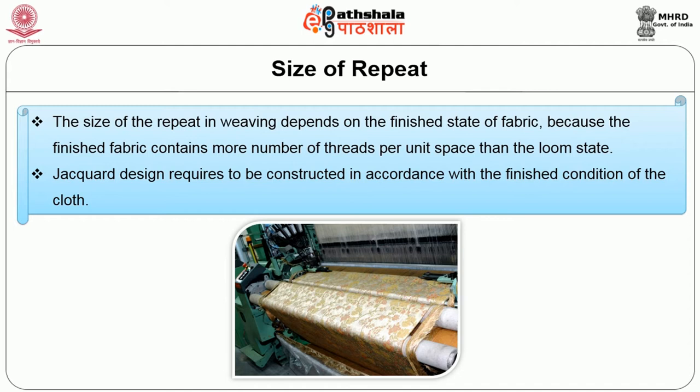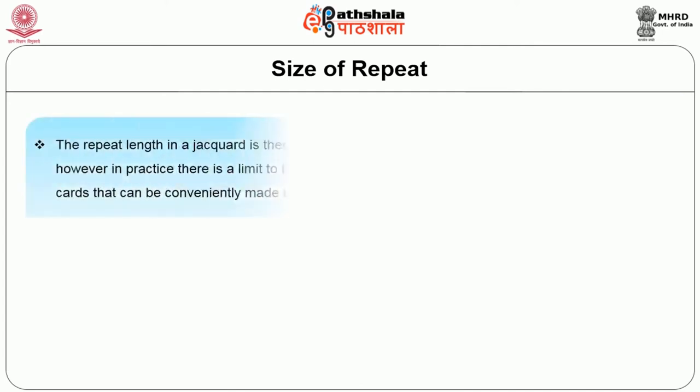For example, if a cloth contains 40 ends per centimeter and 40 picks per centimeter when finished, a design 10 cm long and 10 cm wide will repeat upon 40 × 10 = 400 picks, that is 400 cards, and 40 × 10 = 400 ends. The repeat length in a jacquard is theoretically unrestricted; however, in practice there is a limit to the number of pattern cards that can be conveniently mounted on a machine.